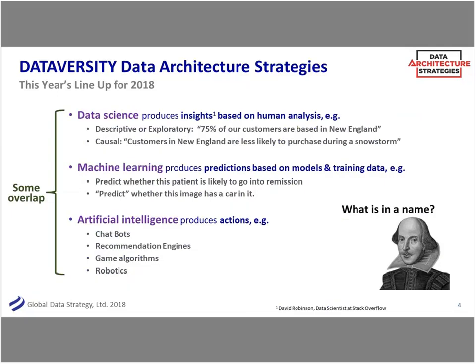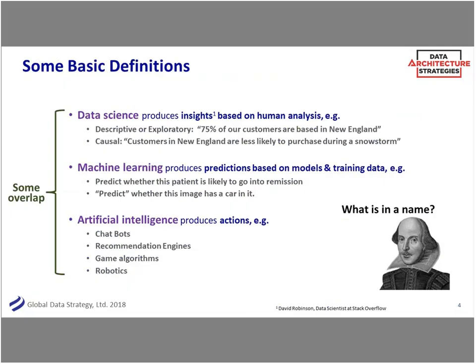Without further ado, some basic definitions — because we're data people and we like definitions. But like any good data person, we don't agree on definitions. There are a lot of words that fly around the industry: data science, machine learning, AI. Machine learning is a subset of AI, which is a broader category with deep neural learning and many different pieces. There's also deep learning and a lot of different approaches within that space.